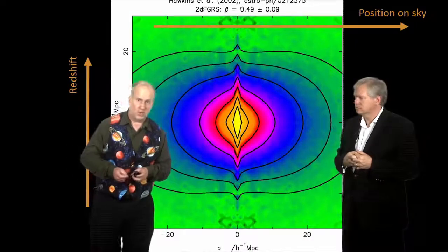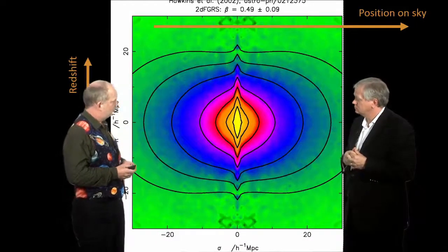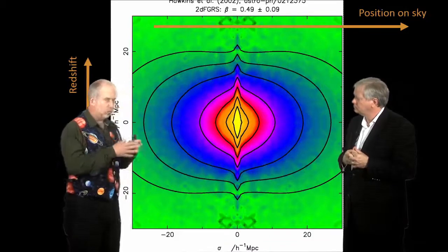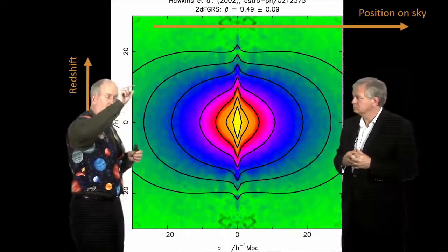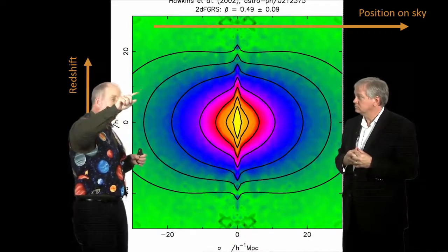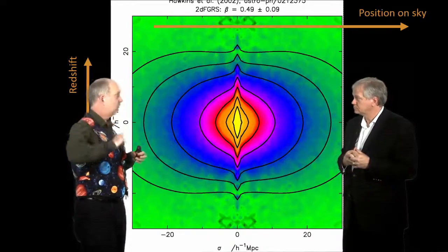This was done by the 2DF Galaxy Redshift Survey here in Australia. And what they did was they did a survey of an absolutely huge number of galaxies. And they'd take strips on the sky, and for each galaxy, they'd measure where it was on the strip, and they'd measure its redshift.